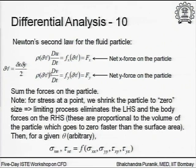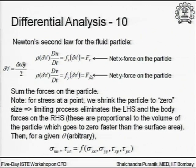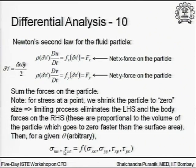You will see that the left-hand side — the inertial force — and the body force on the right-hand side go to zero faster in the limiting process than the surface forces. You will be left with two expressions: one relating sigma_nn to all four stress components, and another relating tau_nt to those stress components, for a given angle theta.